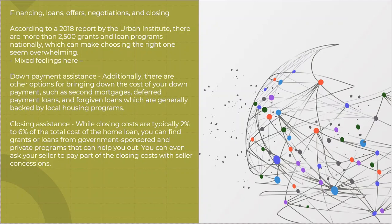There are typically two kinds of assistance that they can get. They can get down payment assistance, so there are programs out there that can bring their cost of their down payment down. There are second mortgages, they can get deferred payment loans, they can get loans forgiven, and these are all generally backed by any local or state housing program. So check with the state that you're in and see what programs are available. They can also get closing cost assistance.